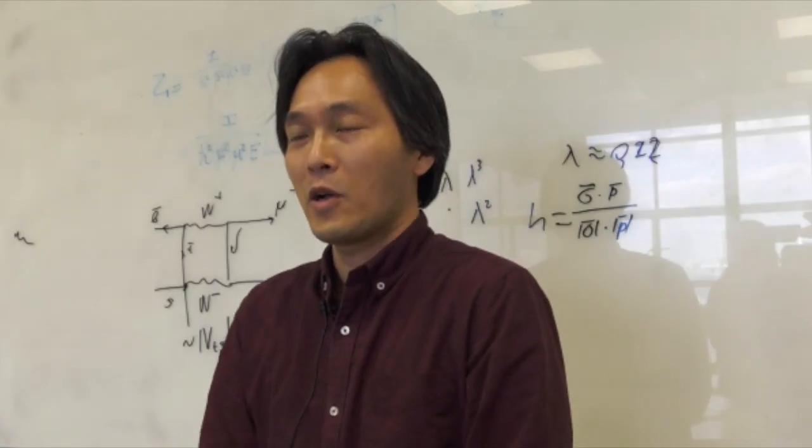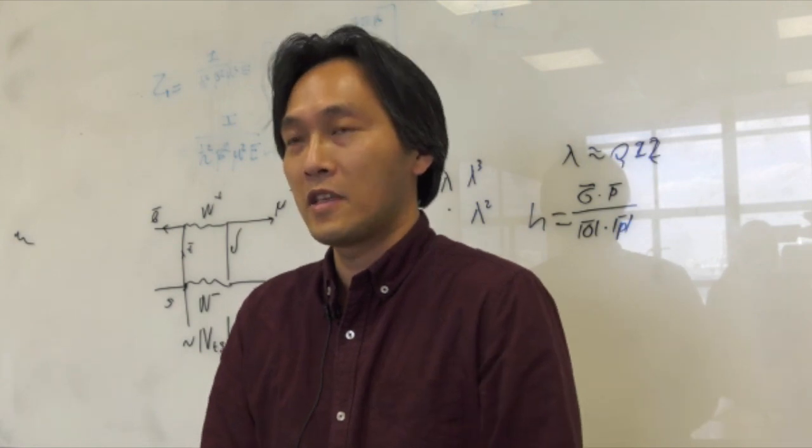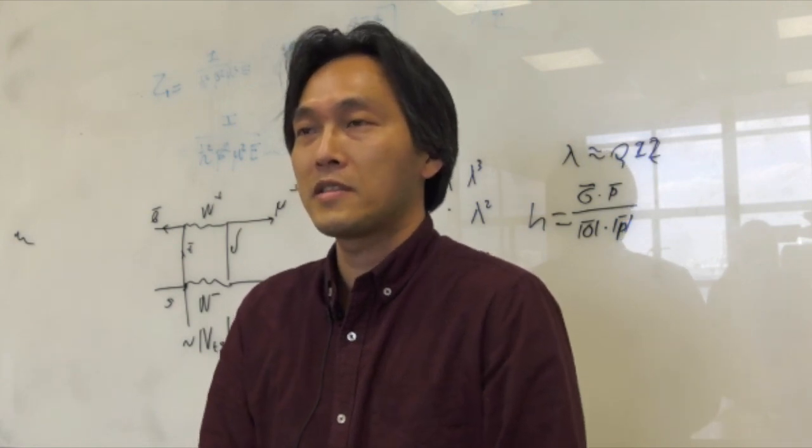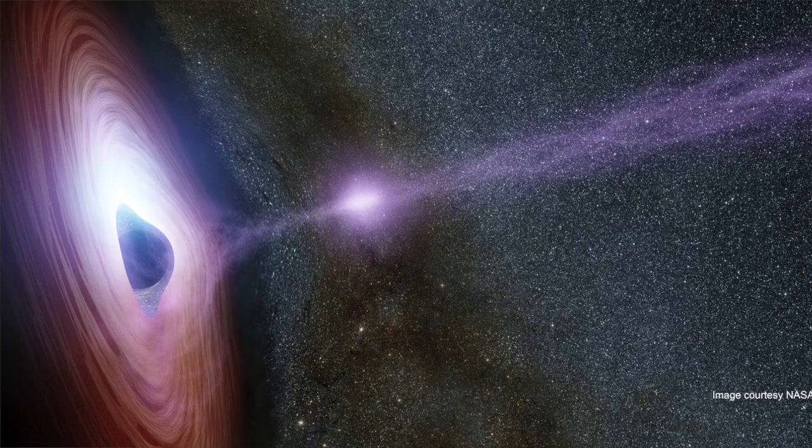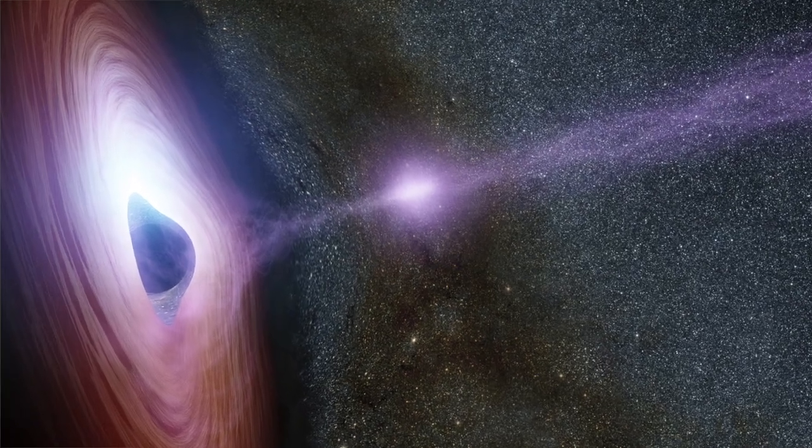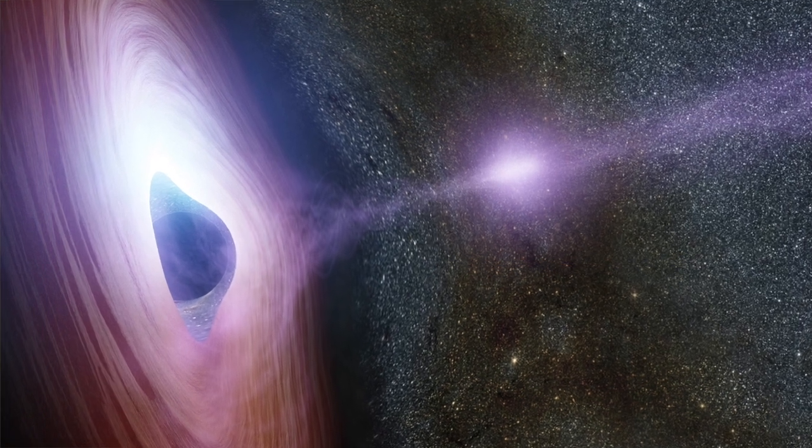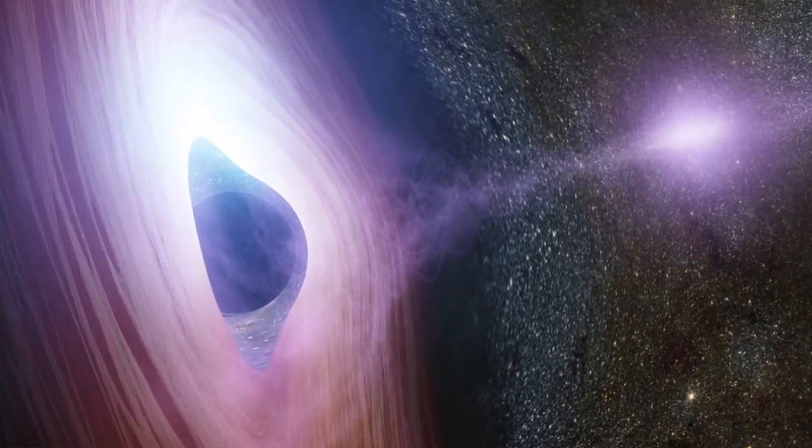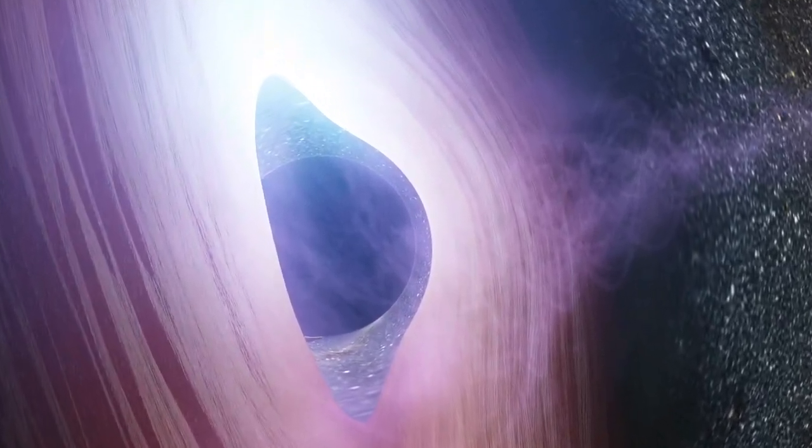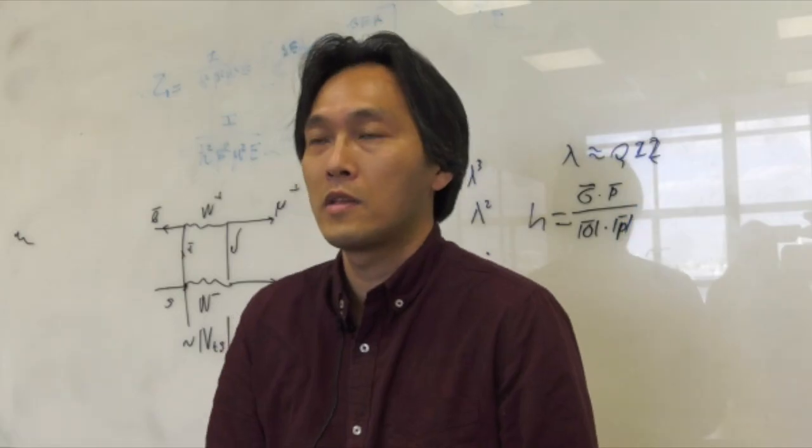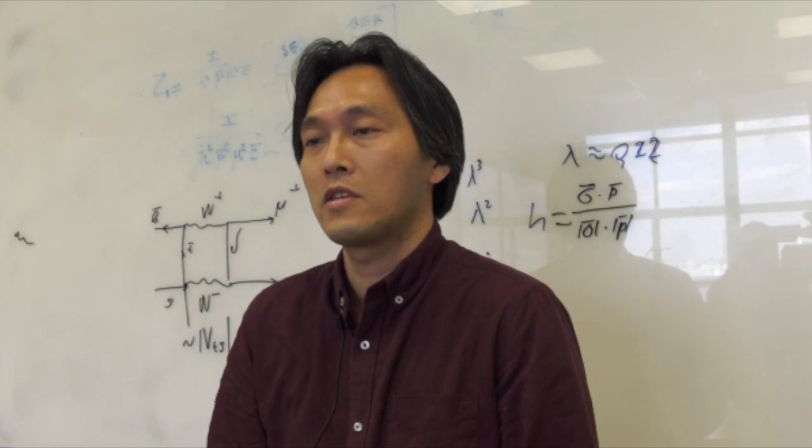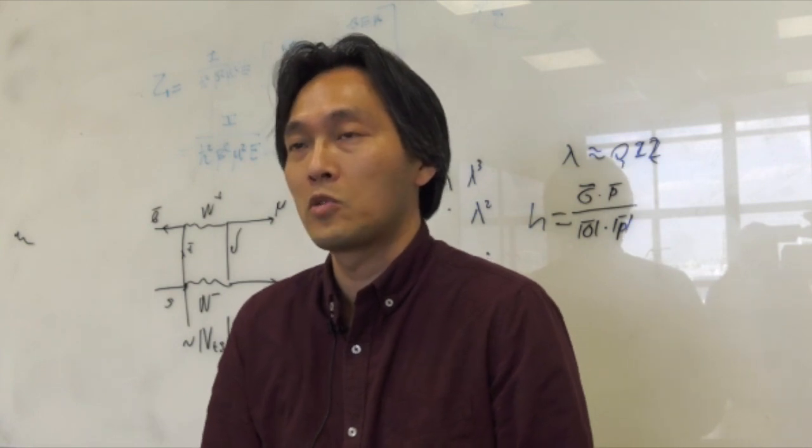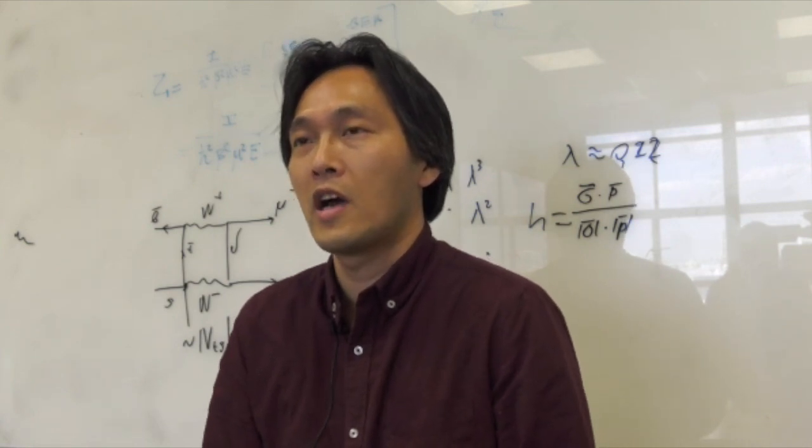I think the black hole is the most fascinating object in the universe, and it basically is an extremely compact and heavy star with an extremely strong gravitational force. Because the gravitational force is so strong, nothing, not even light, can escape its gravitational pull when it comes too close to the black hole. And there's this surface of no return, and that is called the event horizon.